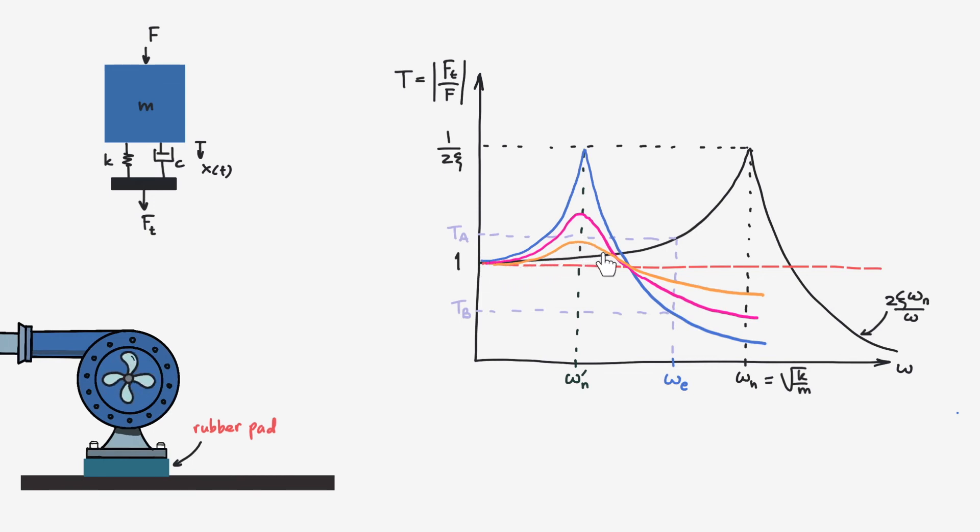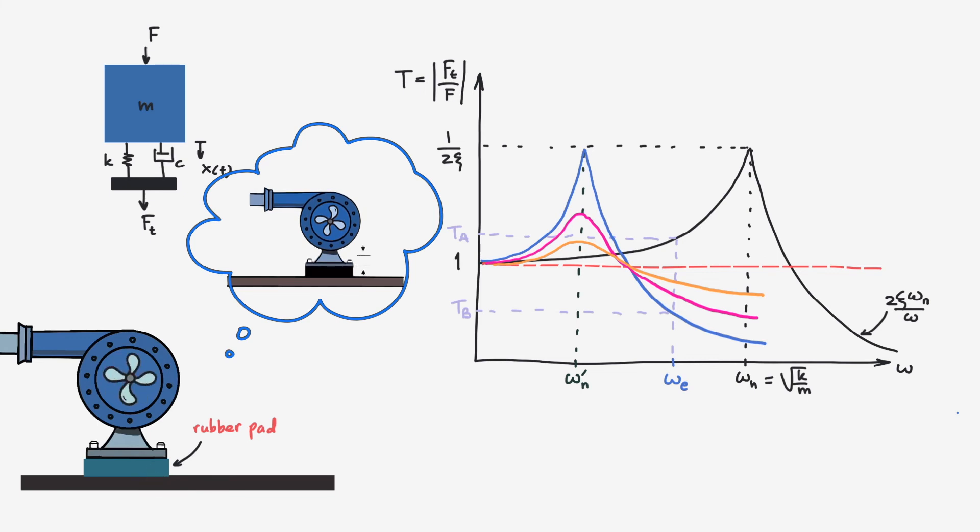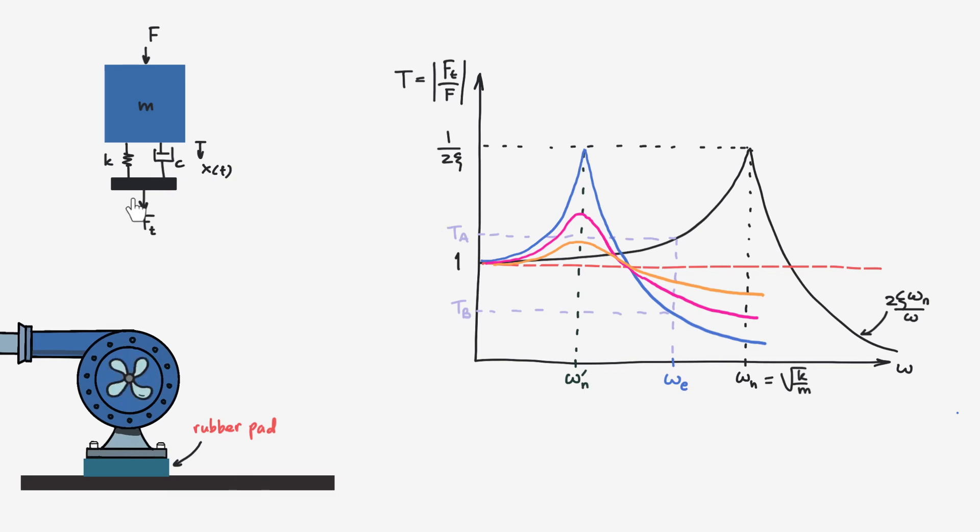In theory, the lower the natural frequency, the better the isolation performance. But the lower the natural frequency means the lower the stiffness of the isolator. In this case, we have to consider the static deflection, which is the strength of the isolator to sustain the weight of the machine before the machine is operated. Therefore, the stiffness constant cannot be too low to allow reasonable static deflection and cannot be too high to have good performance of isolation.